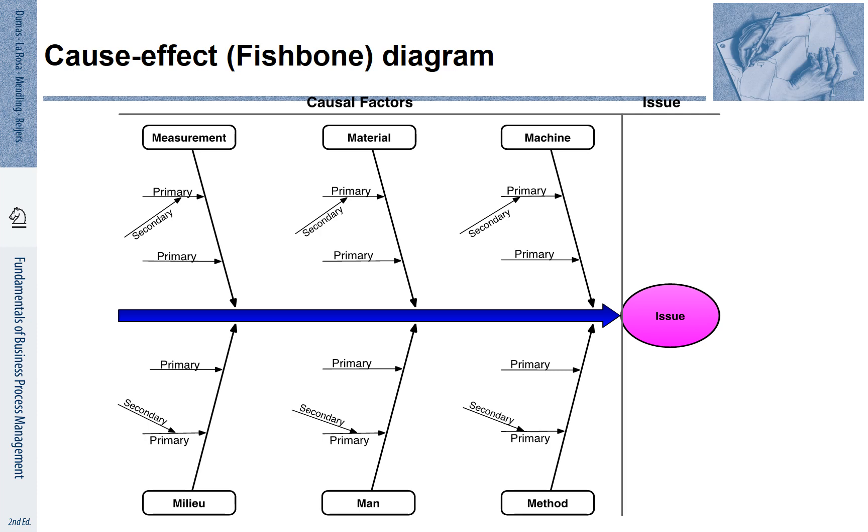On the left-hand side top, we start with measurement. This means that the success associated with the process may be measured in different ways. Maybe the way how we measure gives us a wrong idea.